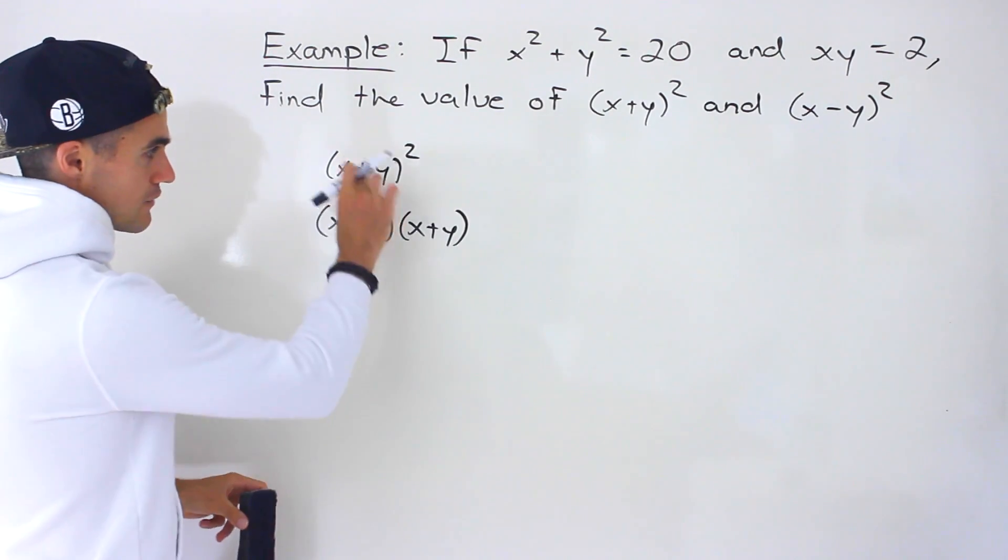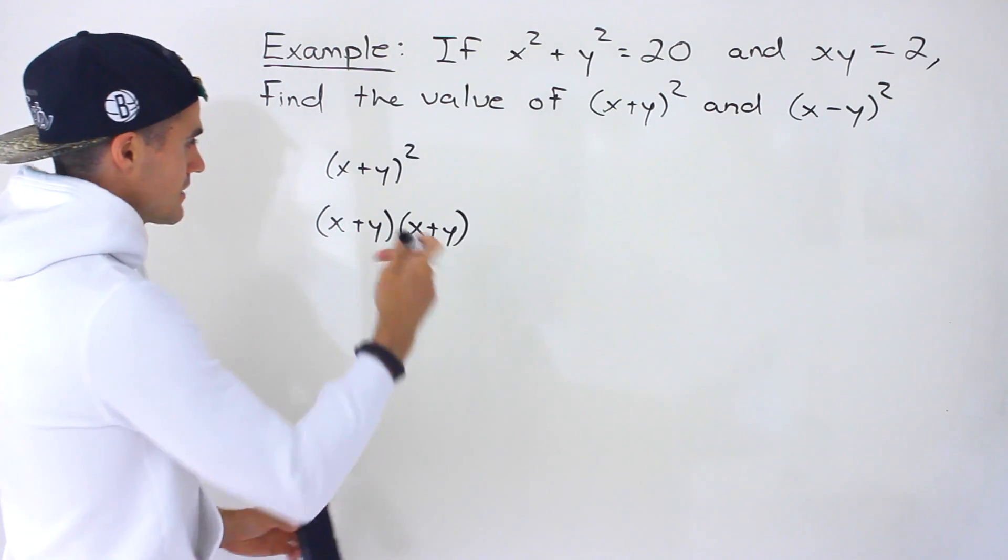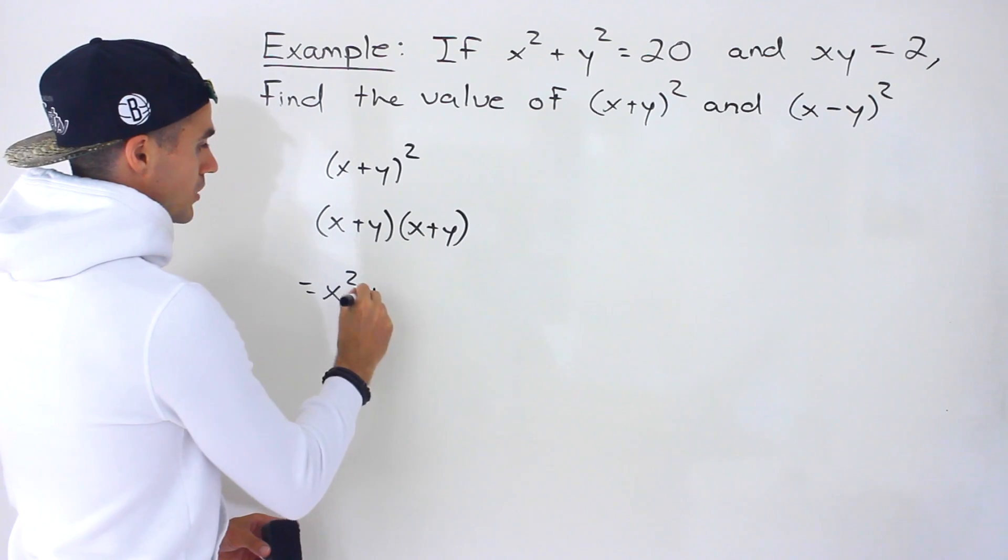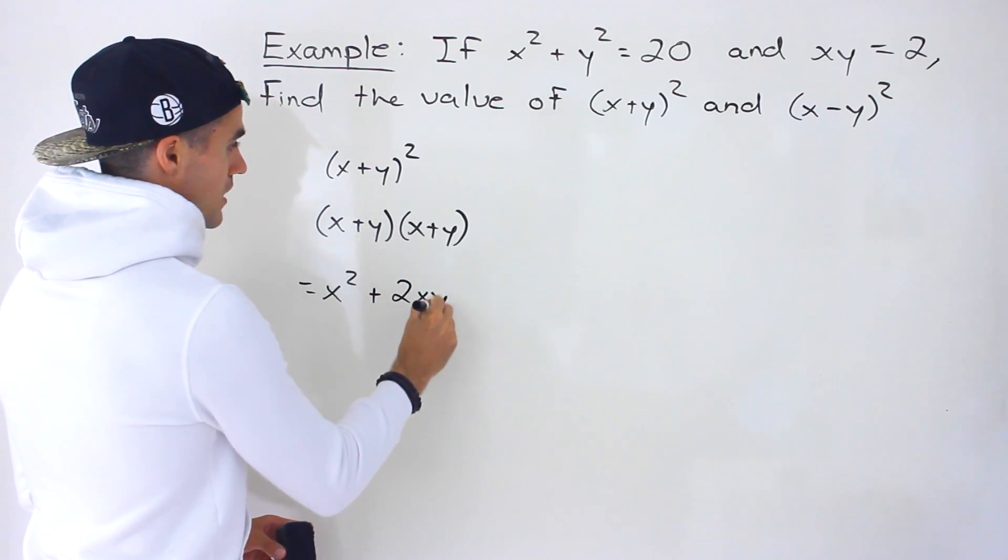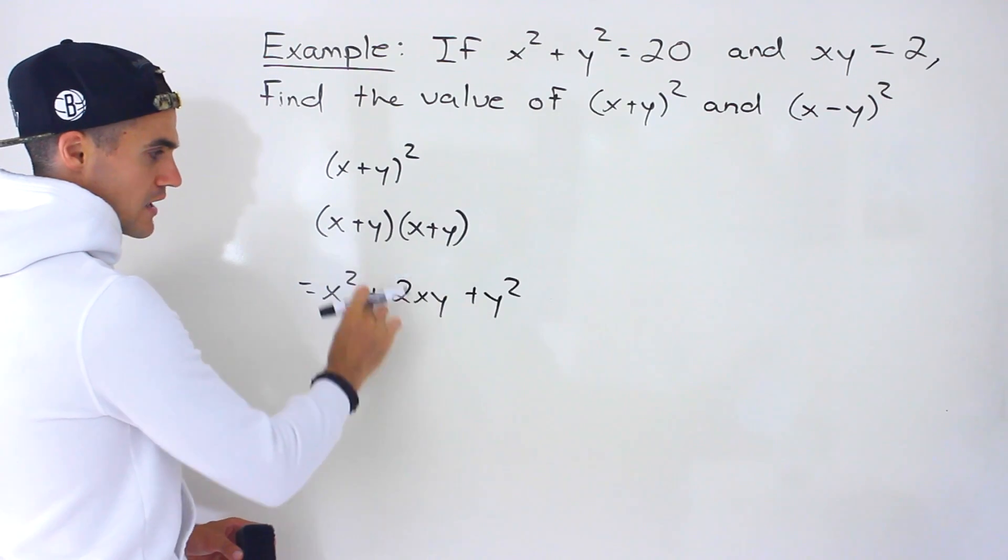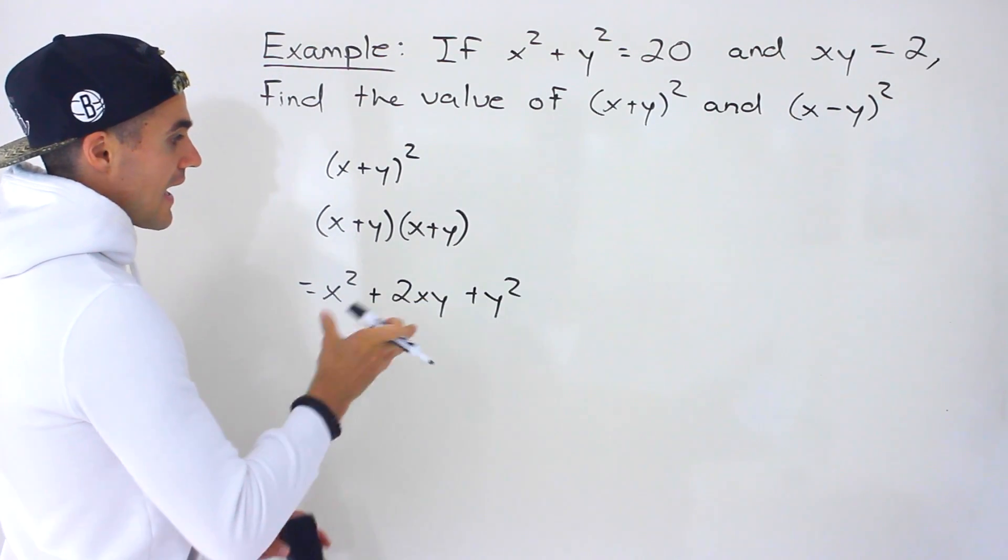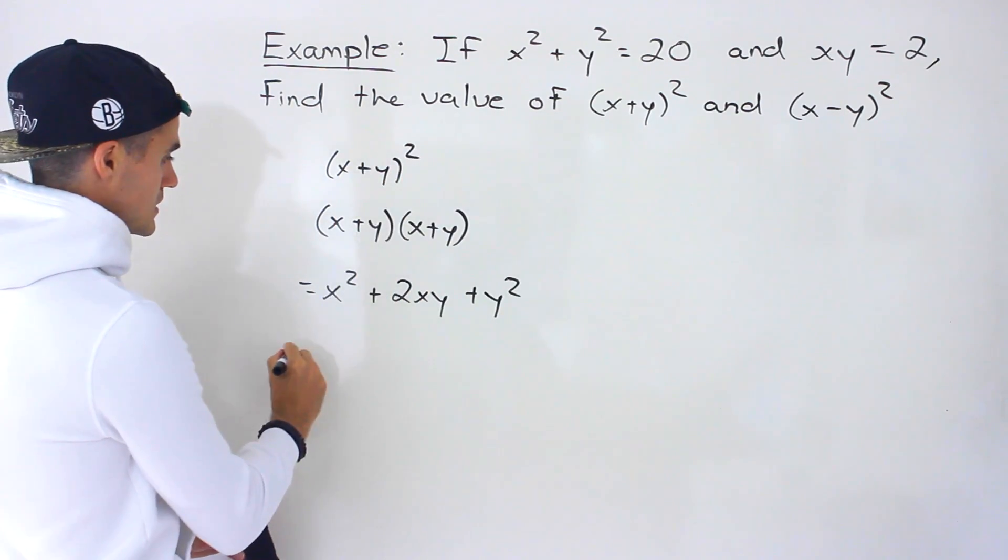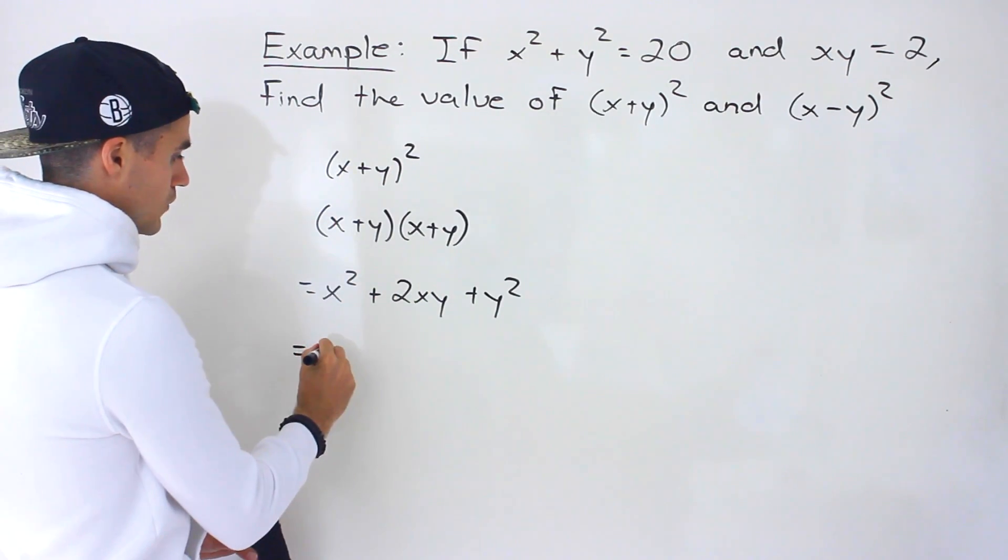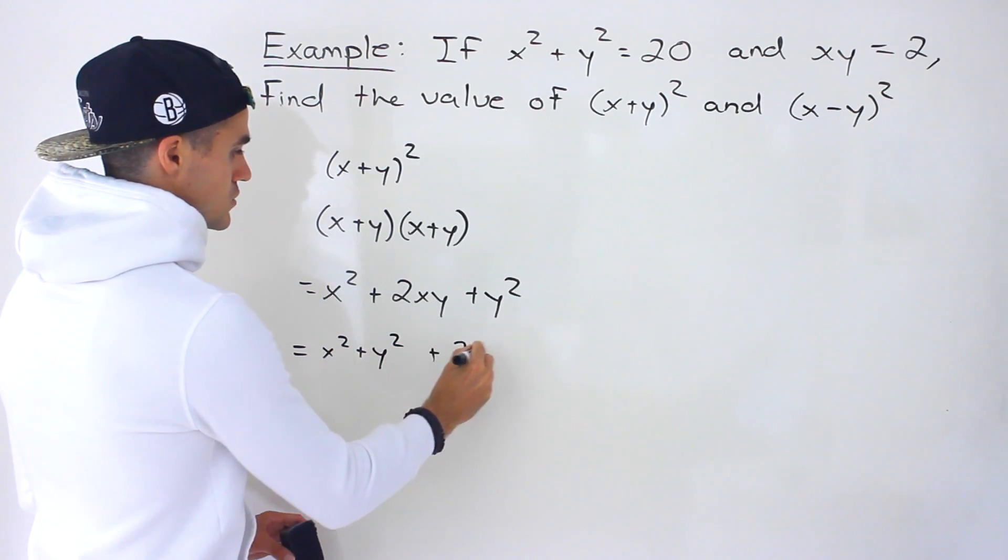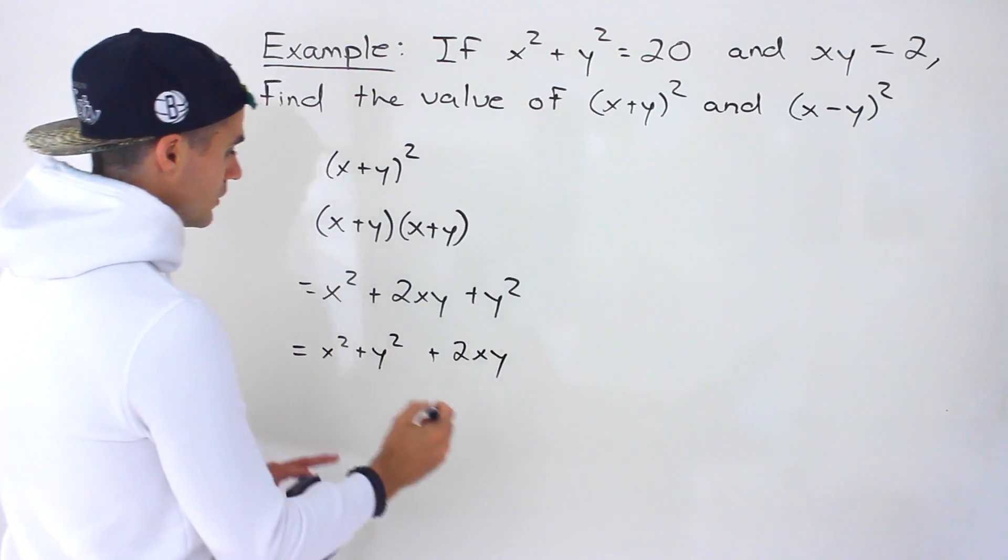But if we expand it, what are we going to end up with? We'll end up with x² + 2xy + y². We would have xy + xy, which simplifies to 2xy. Now notice we can plug stuff in because we can rearrange this as x² + y² + 2xy to show it more clearly.